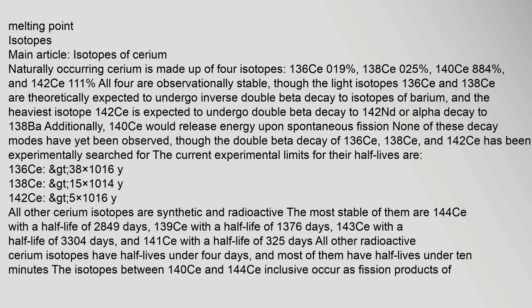Naturally occurring cerium is made up of 4 isotopes: 136Ce (0.19%), 138Ce (0.25%), 140Ce (88.4%), and 142Ce (11.1%). All four are observationally stable, though the light isotopes 136Ce and 138Ce are theoretically expected to undergo inverse double beta decay to isotopes of barium, and the heaviest isotope 142Ce is expected to undergo double beta decay to 142Ba or alpha decay to 138Ba. Additionally, 140Ce would release energy upon spontaneous fission. None of these decay modes have yet been observed.